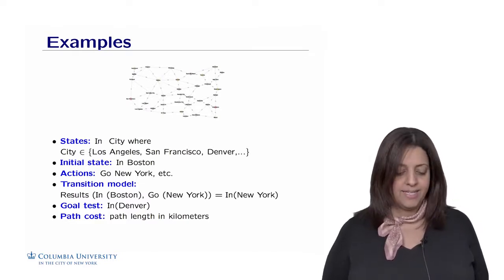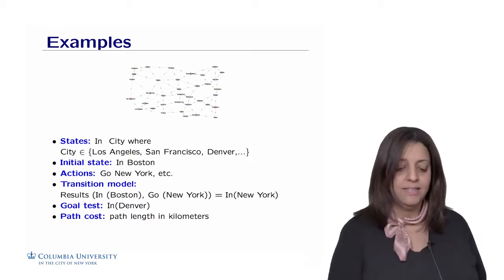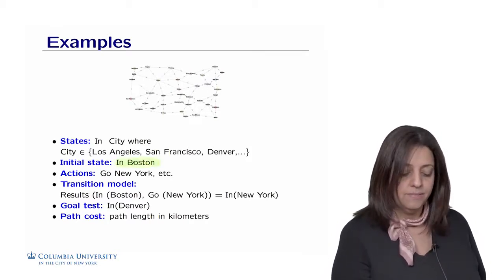The initial state in our example, I'm in Boston, I want to reach Denver, so how can I do that? My initial state is being in Boston, right?